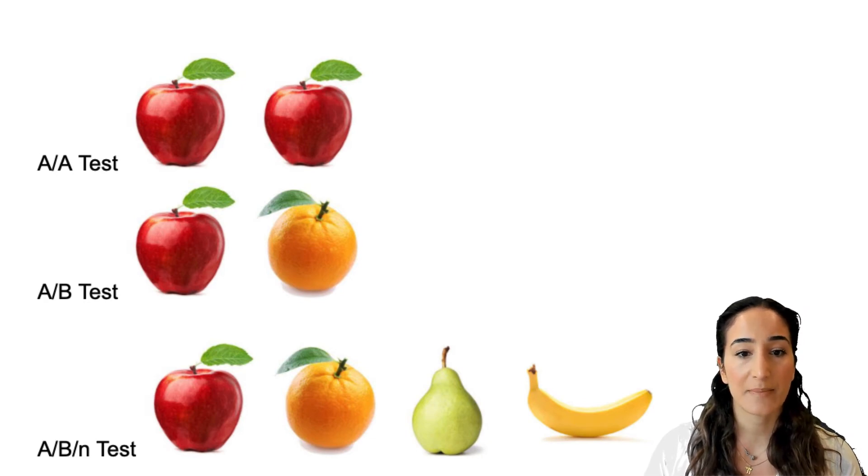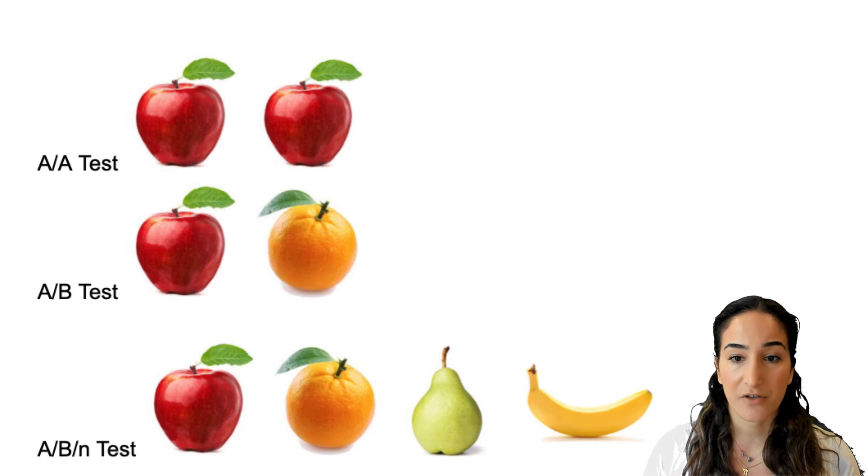Next, we have an A-B-N test. An A-B-N test happens when more than two versions of a page are compared against each other at once. N refers to the number of versions being tested, anywhere from two versions to the nth version.